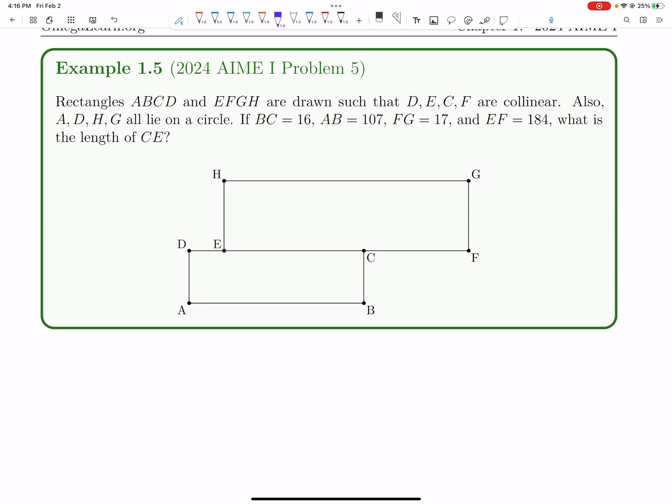Also, A, D, H, and G lie on a circle. So basically, that's telling us these four points are cyclic.